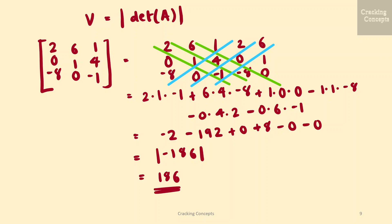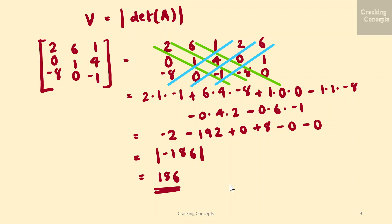For that, we write the first three columns followed by the first two columns repeated to the right-hand side. Then we take two sets of diagonals: a set from left to right with three diagonals, and the negative of diagonals from right to left. This gives: 2·1·(−1) + 6·4·(−8) + 1·0·0 − 1·1·(−8) − 0·4·2 − 0·6·(−1). On reducing this, we get the value as 186.